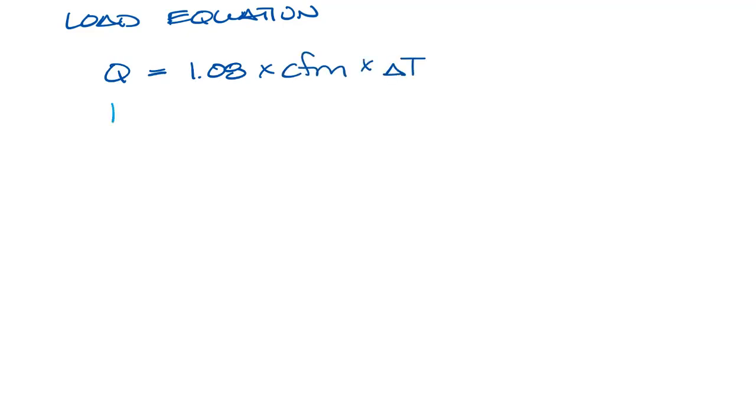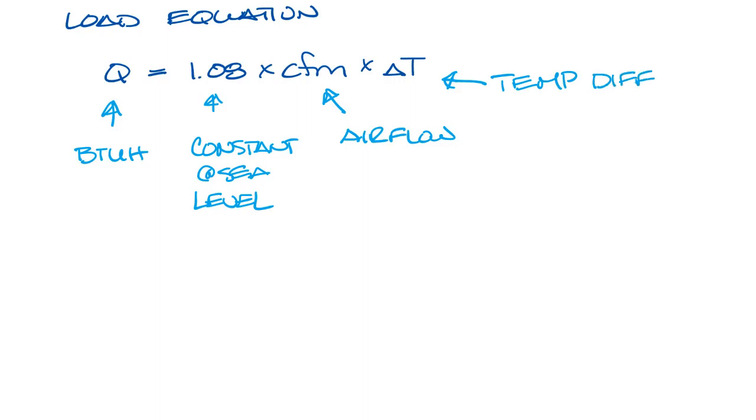Q is measured in BTU per hour. 1.08 is a constant at sea level. CFM is your air flow. And delta T is the temperature differential between the temperature you're putting into the space and the temperature you want to maintain in the space.